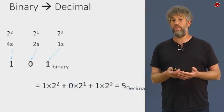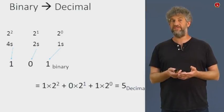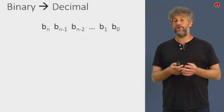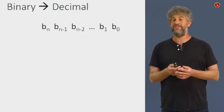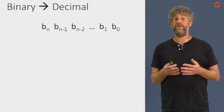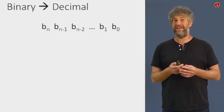And in general, what do we do? Exactly the same thing. You have any sequence of bits, and we're going to number them from the rightmost bit, which is going to be b0, the next one b1, and so on, all the way to bn, if we have n plus 1 bits.